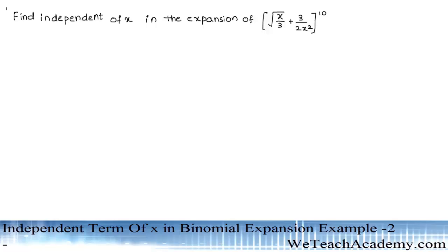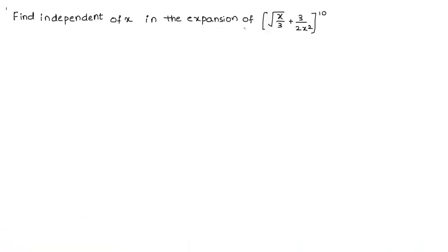Hello friends, welcome to Wittish Academy. Today in this presentation we are going to solve an example on the independent term of x in the binomial expansion. We have to find the independent term of x in the expansion of the binomial term: the square root of x divided by 3, plus 3 divided by 2x squared, whole power 10.